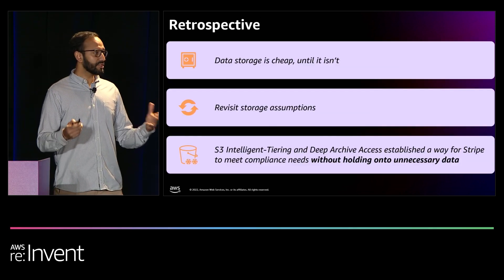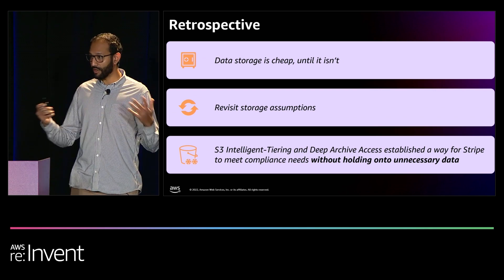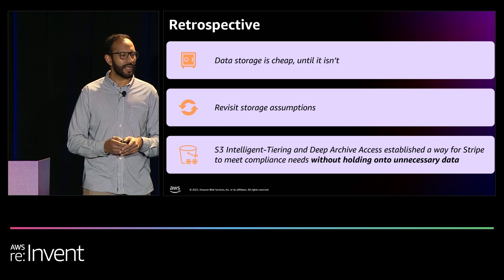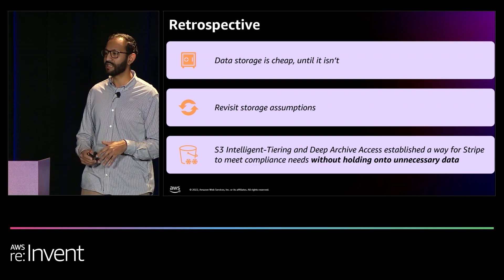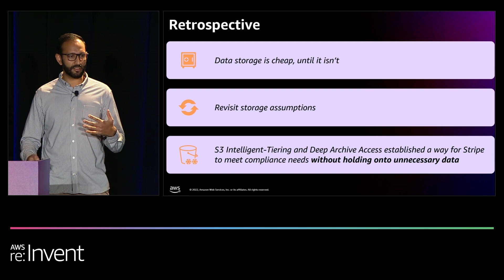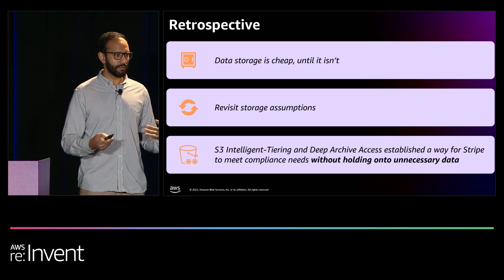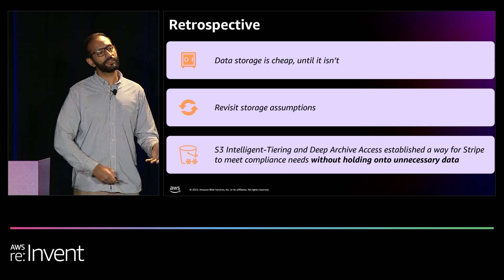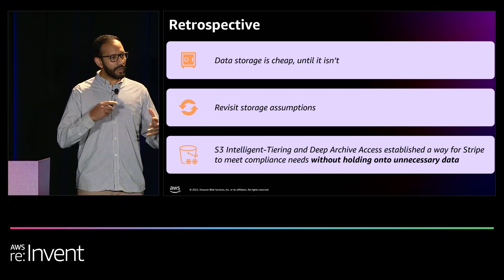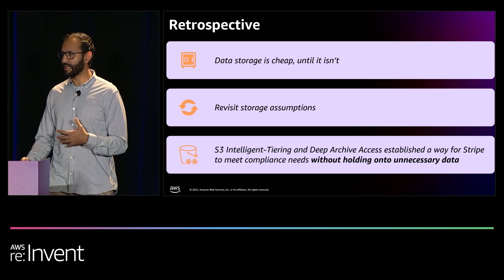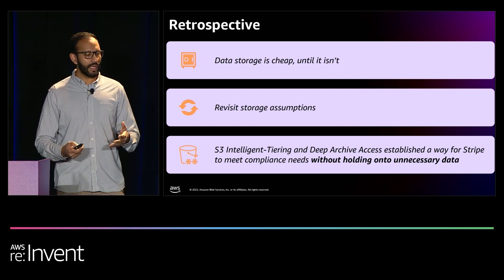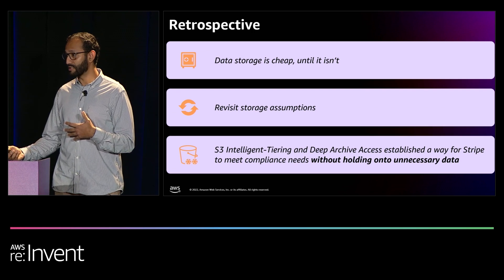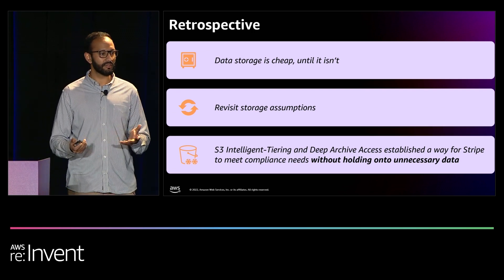We've learned that data storage is cheap until it isn't. S3 offers many ways to maintain data at a reasonable and competitive rate. But at hundreds of petabytes, if your data is just sitting there and you're not touching it, that does add up over time. So we need to revisit our storage assumptions. The decisions we made one, two, or five years ago were correct — it was right to hold onto data we might need in the future. But where and how that data is managed are the things we want to revisit. With S3 Intelligent-Tiering and Deep Archive Access, we have a way to understand our data, still meet our compliance needs, and archive data that isn't necessary at just a fraction of the cost — saving us significant money over time.